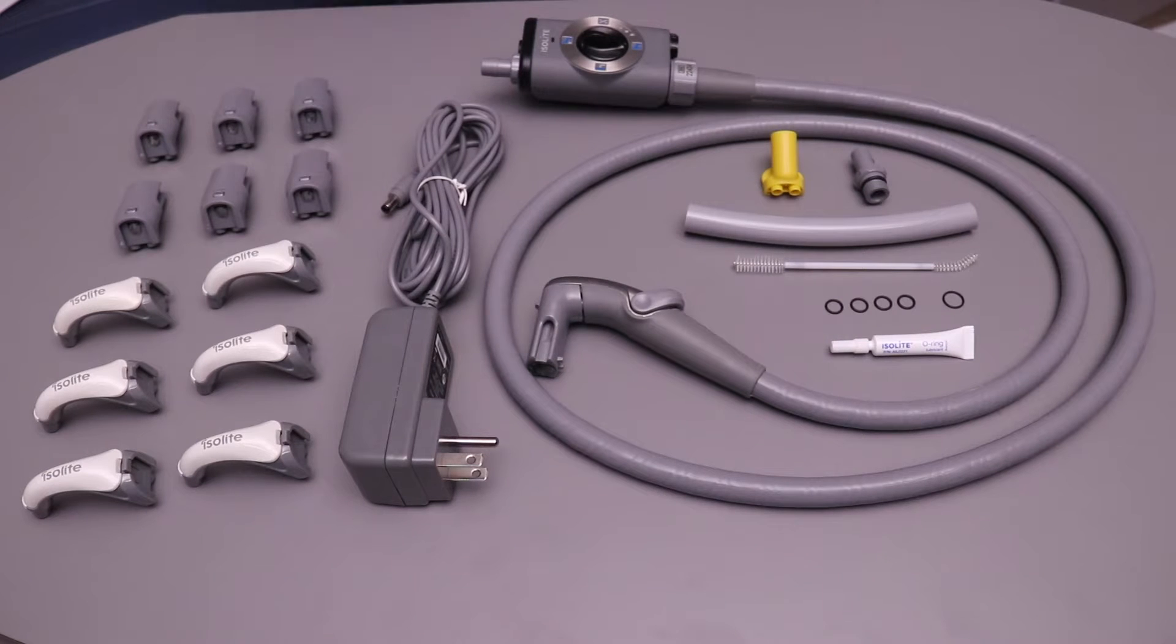The Isolite Pro solution comes with a control head hose, which is connected to the power vacuum base and the control head.